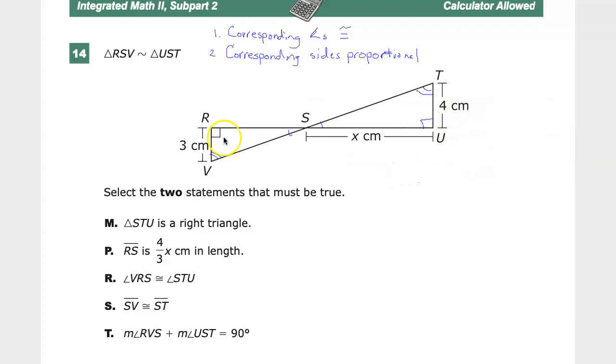And since we said that the angle for R is already marked as a right angle, and angle U is corresponding, and it's a right angle, that makes STU a right triangle. Now, don't get weirded out here. The U does not have to be in the middle. That's not required in any case. It's just naming the triangle. It does not have to be where the middle letter in the name is the right triangle. So M is true.